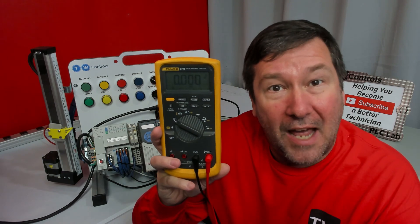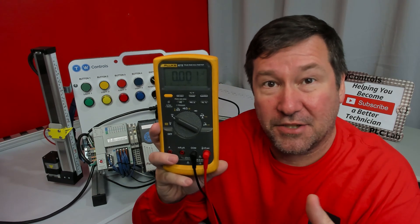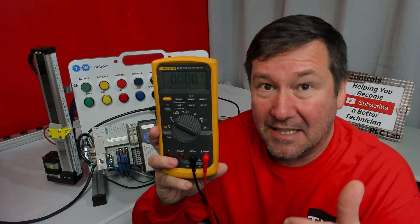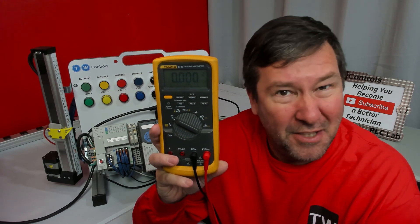What happens if you're on AC voltage and you measure DC? And more importantly, what happens when you're on DC and you measure AC? Do they measure right?